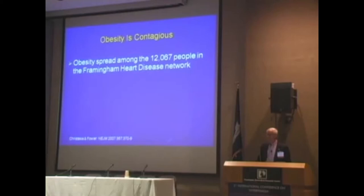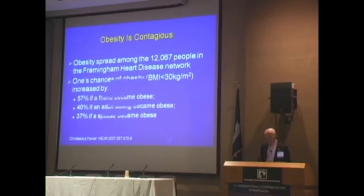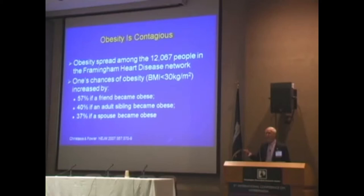Obesity is clearly contagious in the sense that if you are fat and you have relatives and friends, you will influence their risk. This is the Framingham study data from Christakis: your chance of obesity is increased by 57% if a friend becomes obese, 40% if an adult sibling becomes obese, and 37% if a spouse becomes obese. So there's a lot of interplay between obesity in one person and obesity in their relatives.